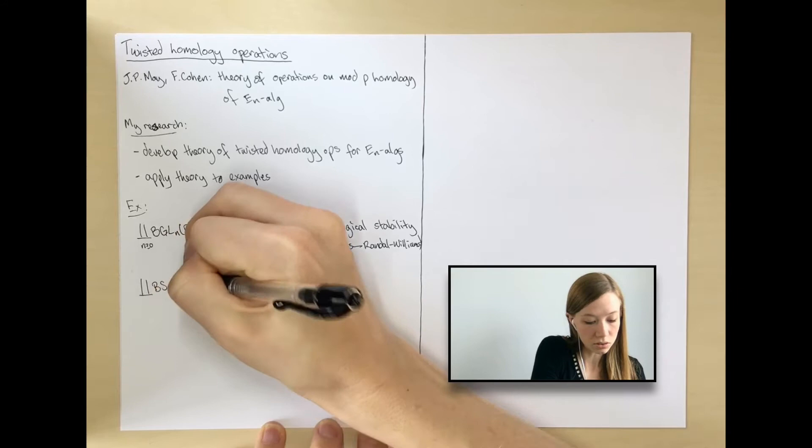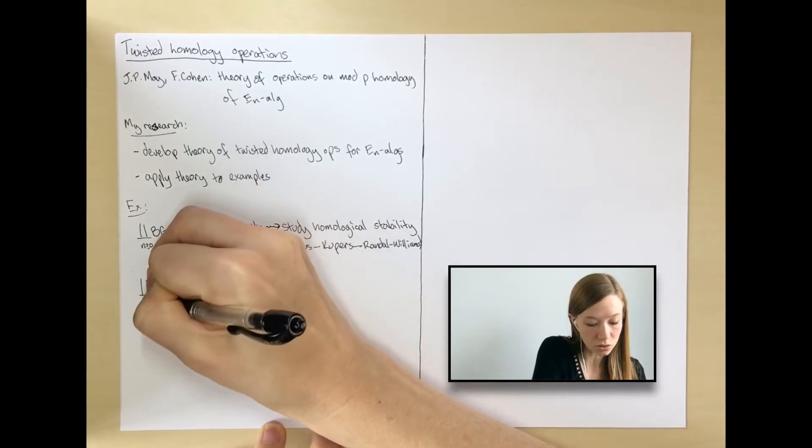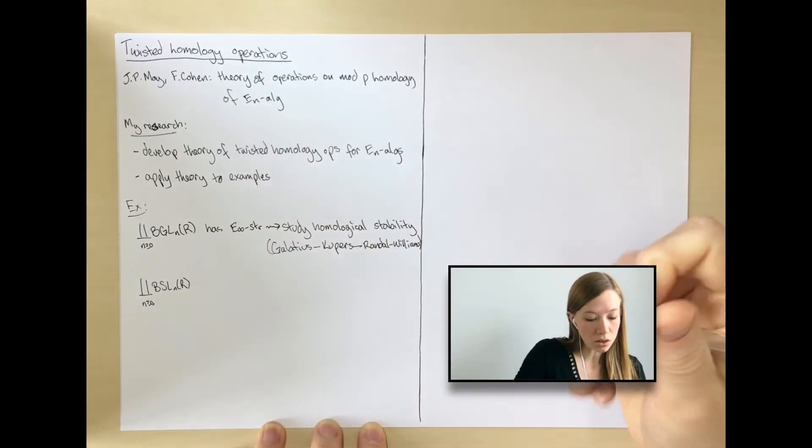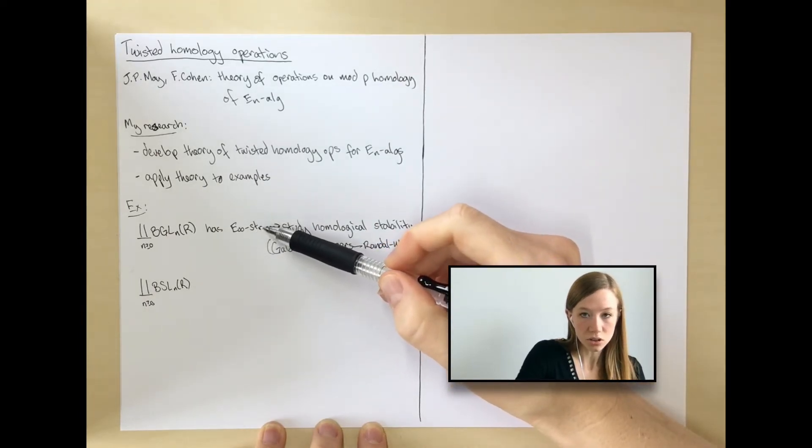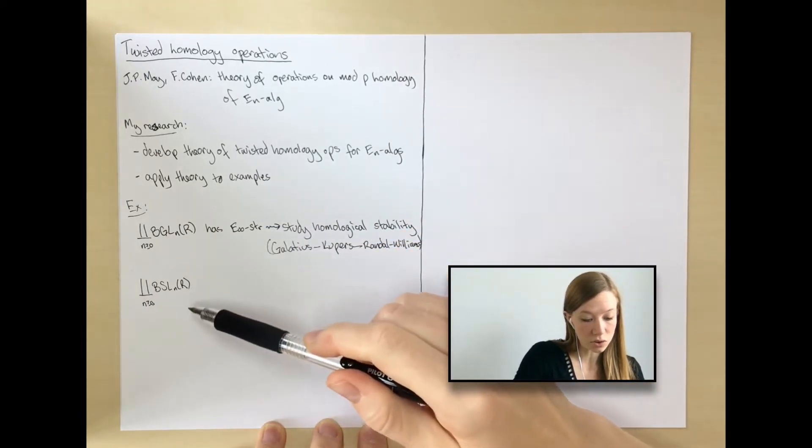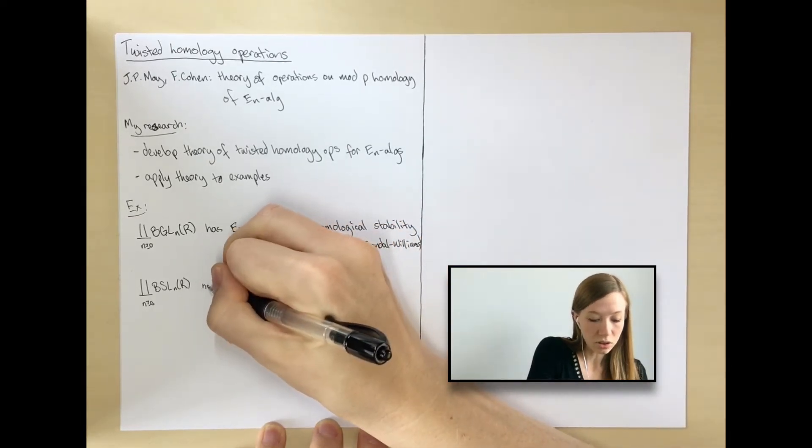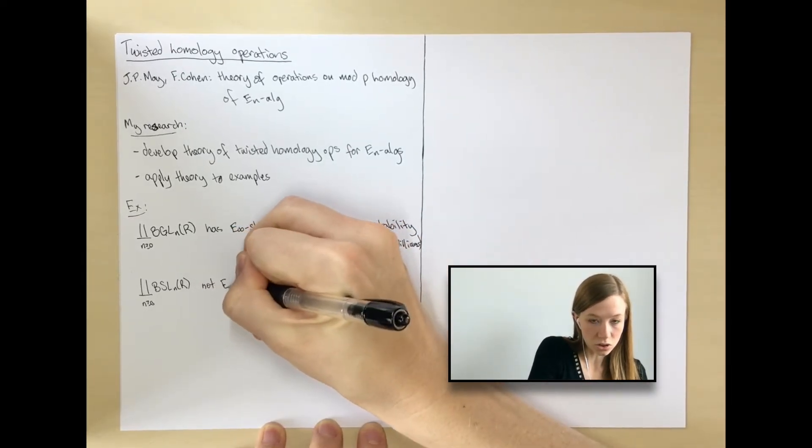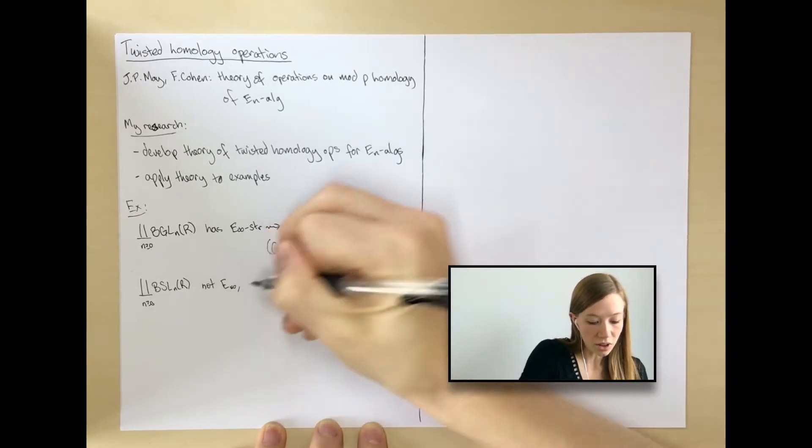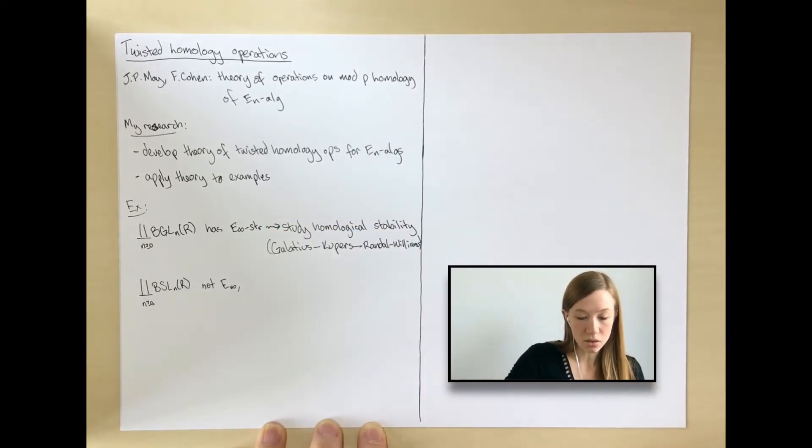What if we tried to do the same thing for special linear groups? We can also look at the disjoint union of classifying spaces of special linear groups, and you can take this E-infinity structure and try to restrict it to one for special linear groups. But unfortunately, it doesn't work. It doesn't give you an E-infinity structure, so you can't just directly apply their methods.